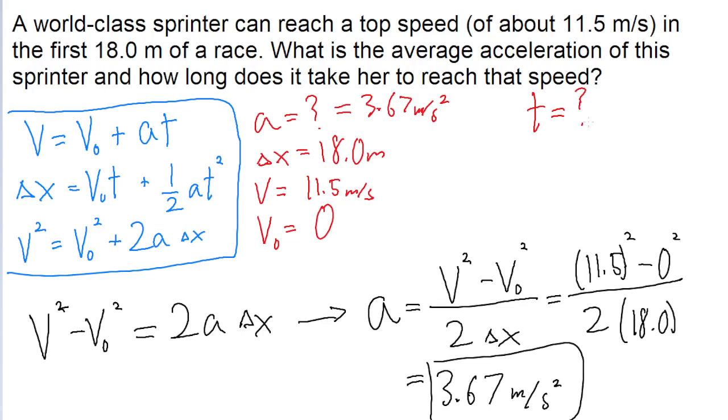So once again, the same drill. We'll look at our equations and pick one equation that has time and also has everything else is something we know. And since every other variable is something that's known anyway, we can really use either of the first two equations.